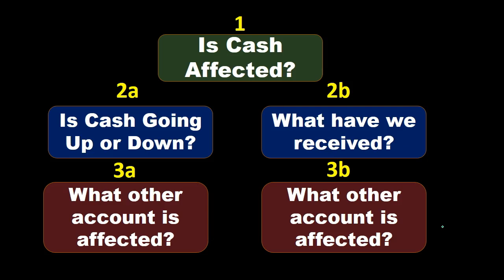The normal journal entry thought process is mainly dealing with cash as a major focal point. The first question we ask for normal journal entries is whether cash is affected — if cash is going up or down, then we consider the second account. If cash is not affected, we consider what we received. The adjusting journal entry process can't use that approach because cash will not be involved in any of the adjusting journal entries, whereas cash is involved in many of the normal journal entries.